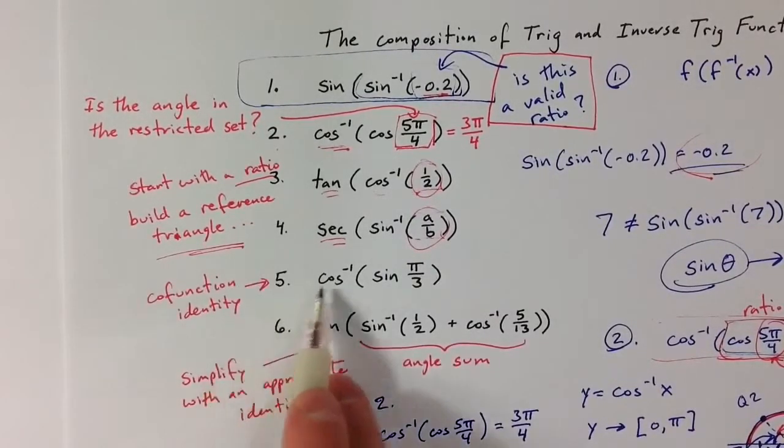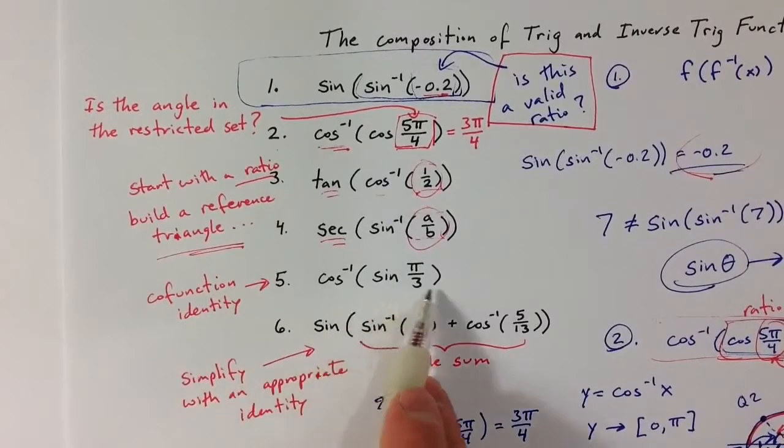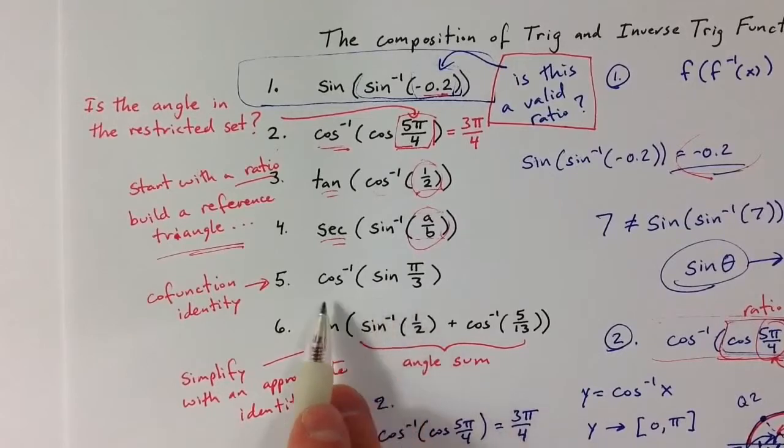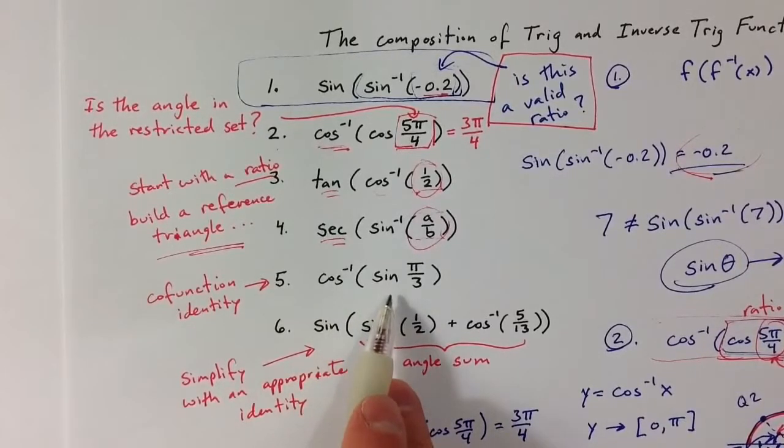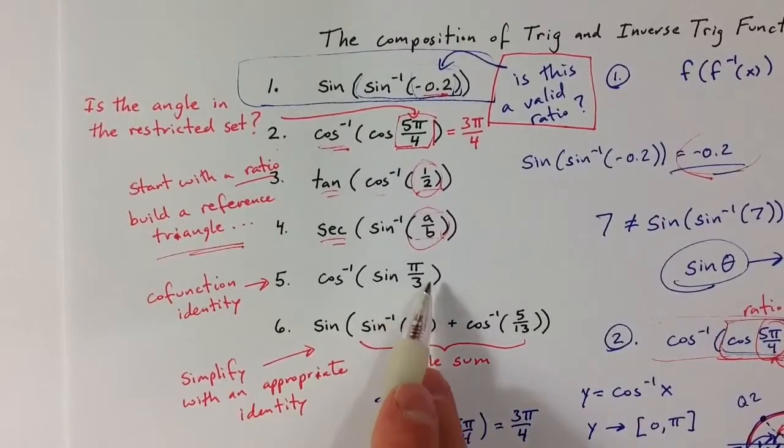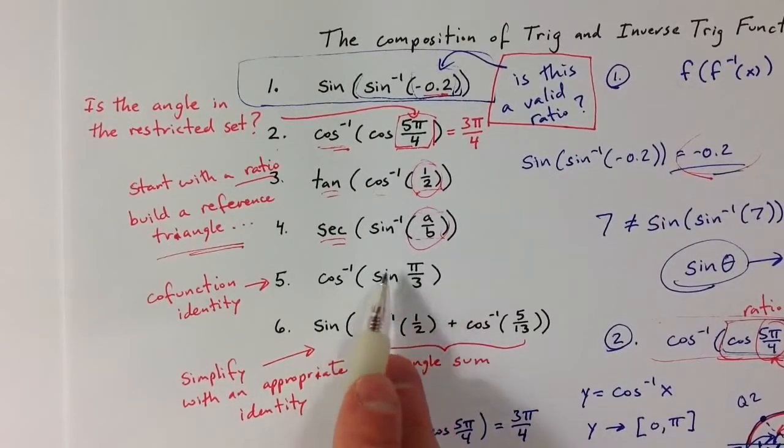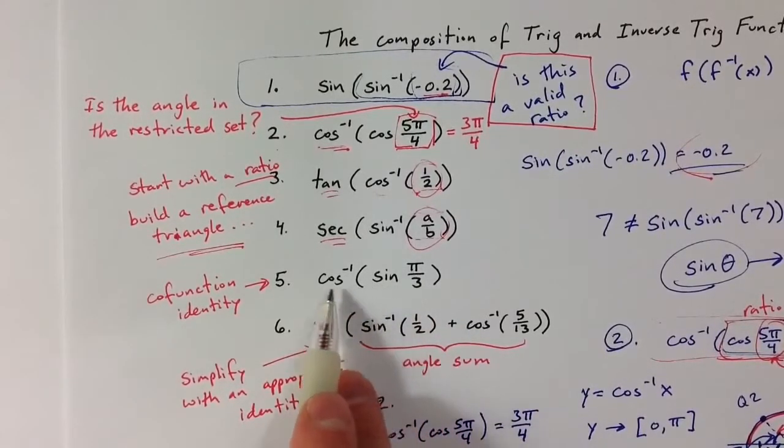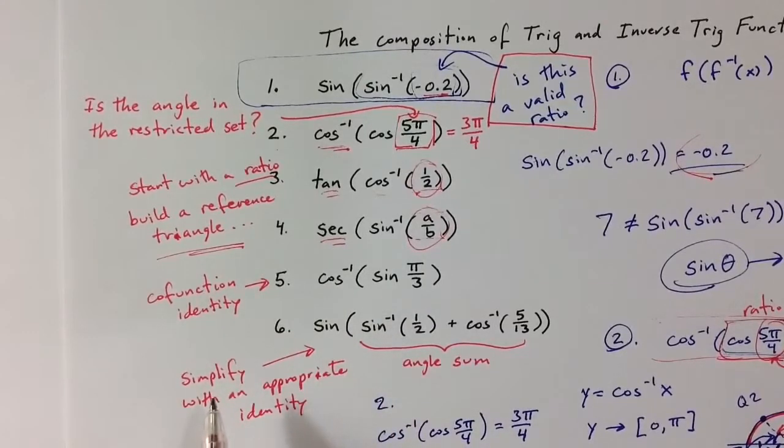In problem 5, we were able to use a cofunction identity to simplify the expression and make the trig functions match, the inverse trig function and the trig function inside. We could try to work with this angle and figure out what the ratio would be and then figure out the angle that has that cosine ratio, but that's kind of a big mess. So the cofunction identity was pretty helpful.